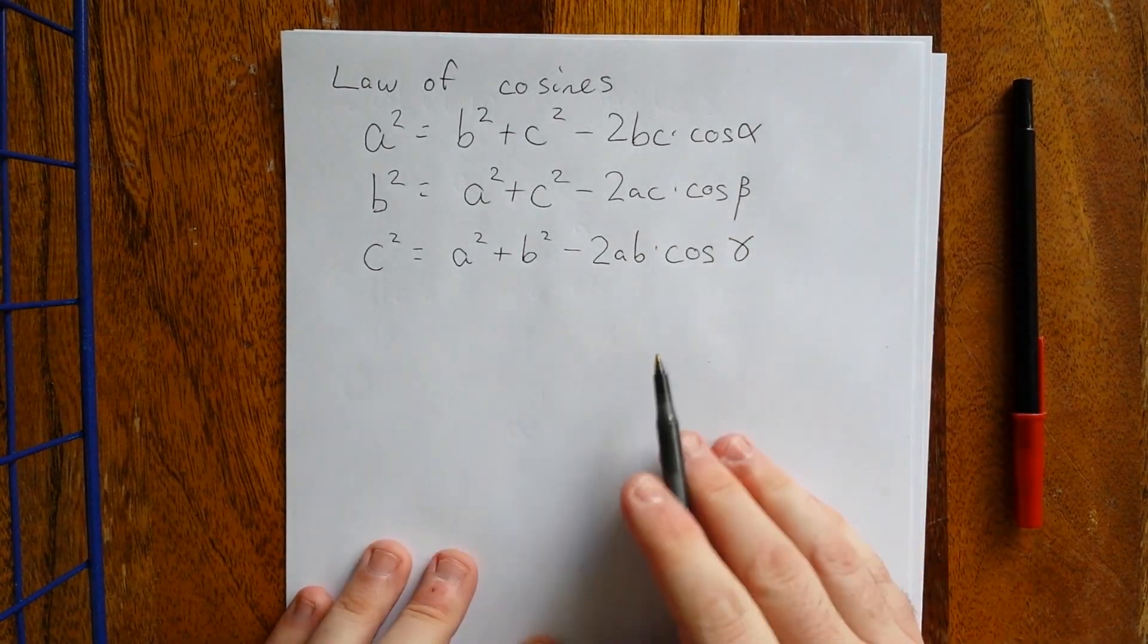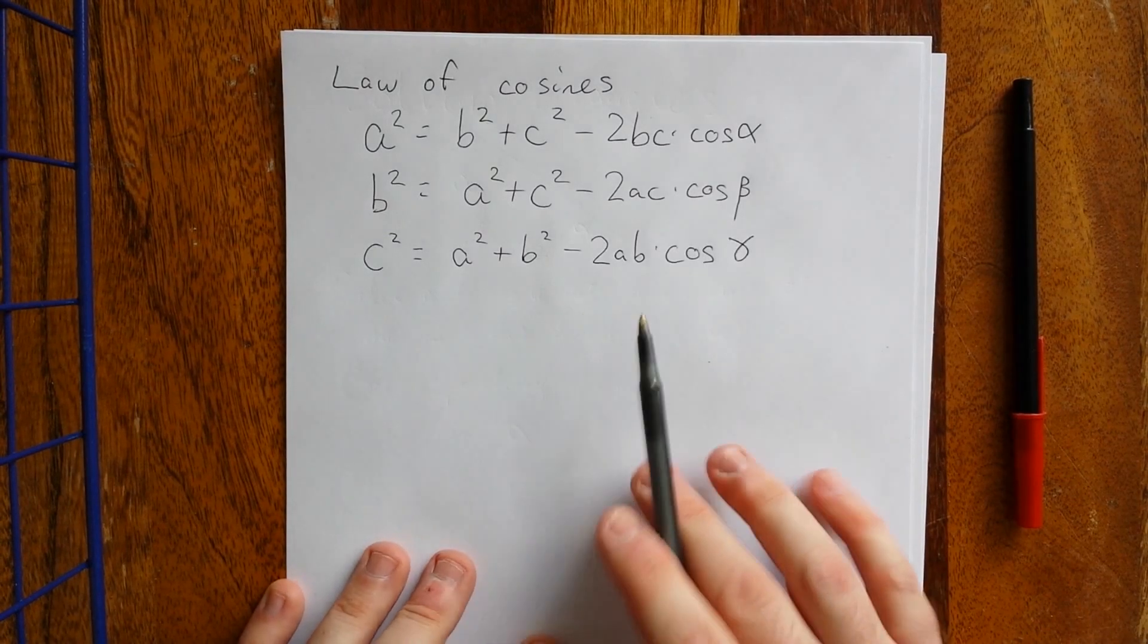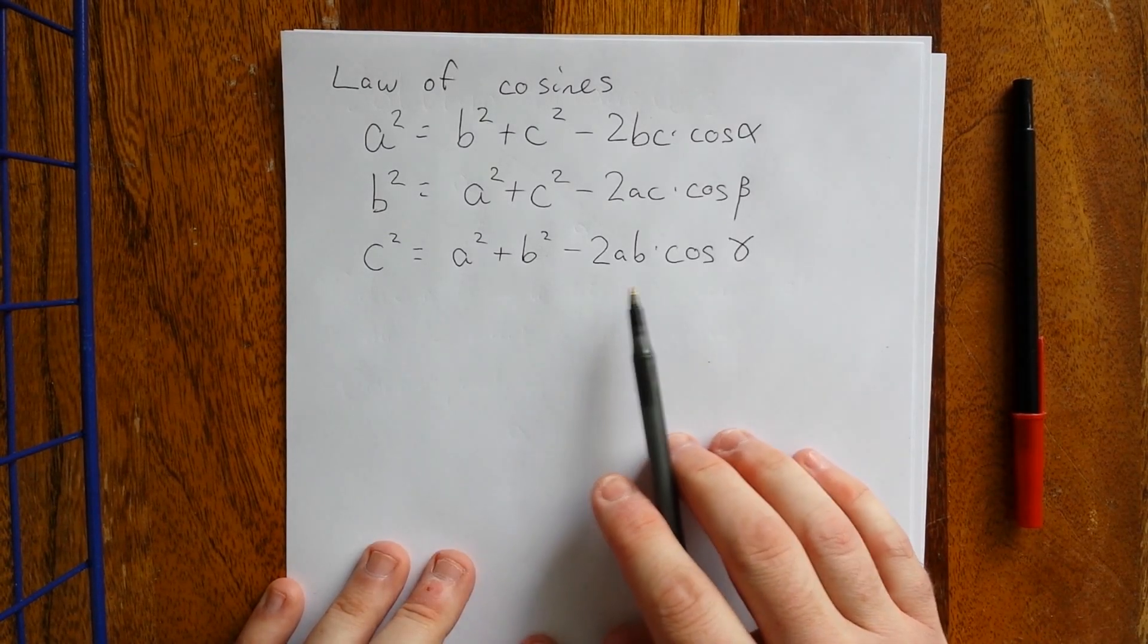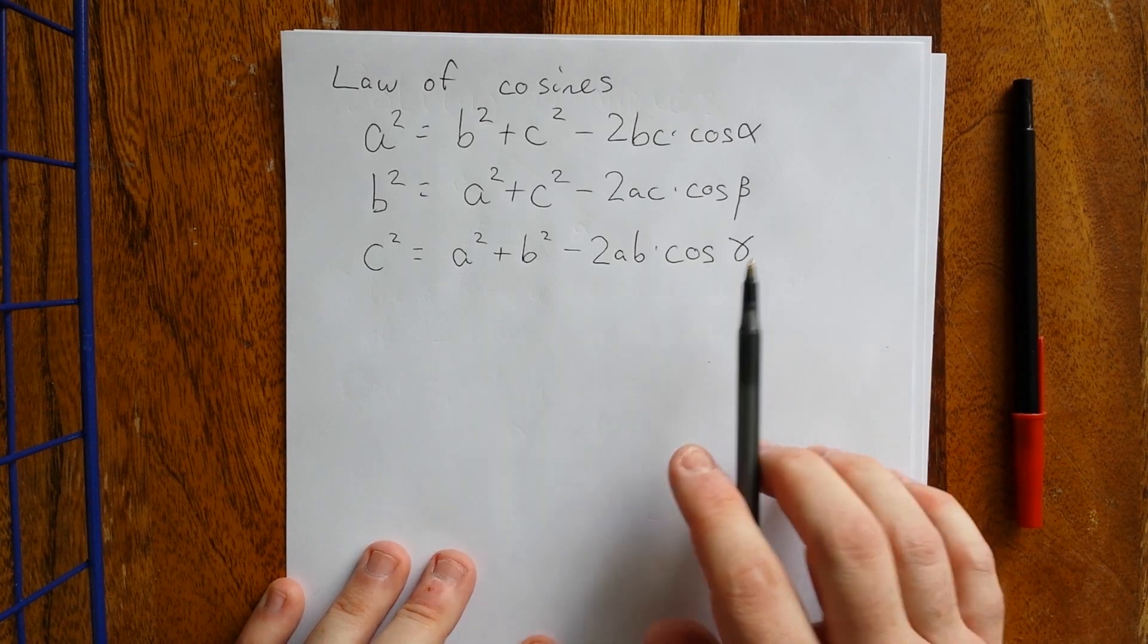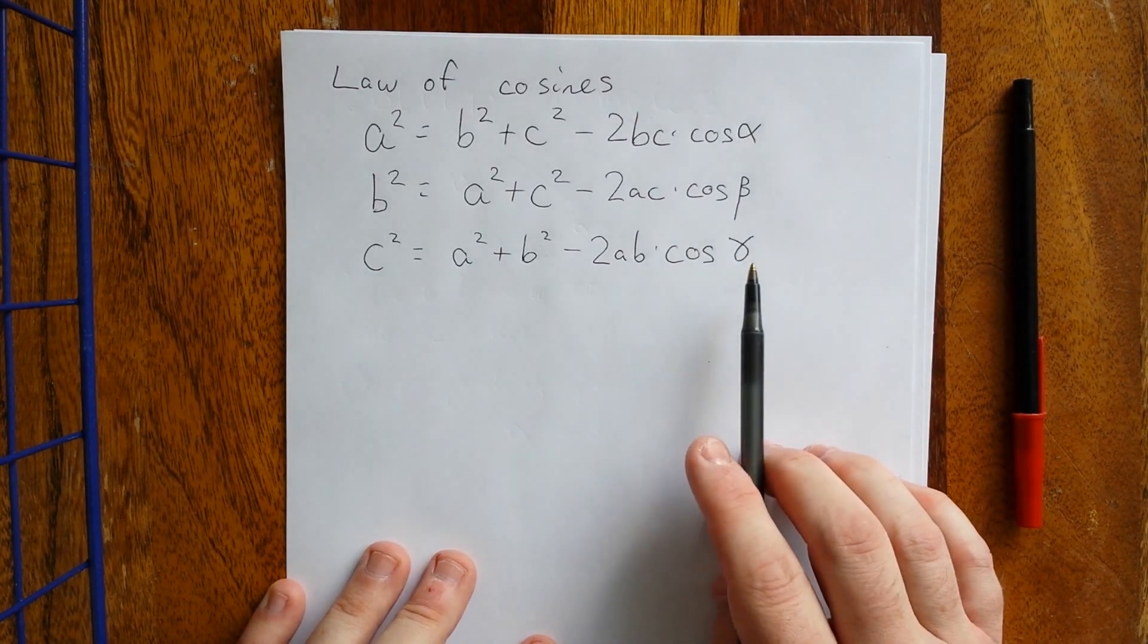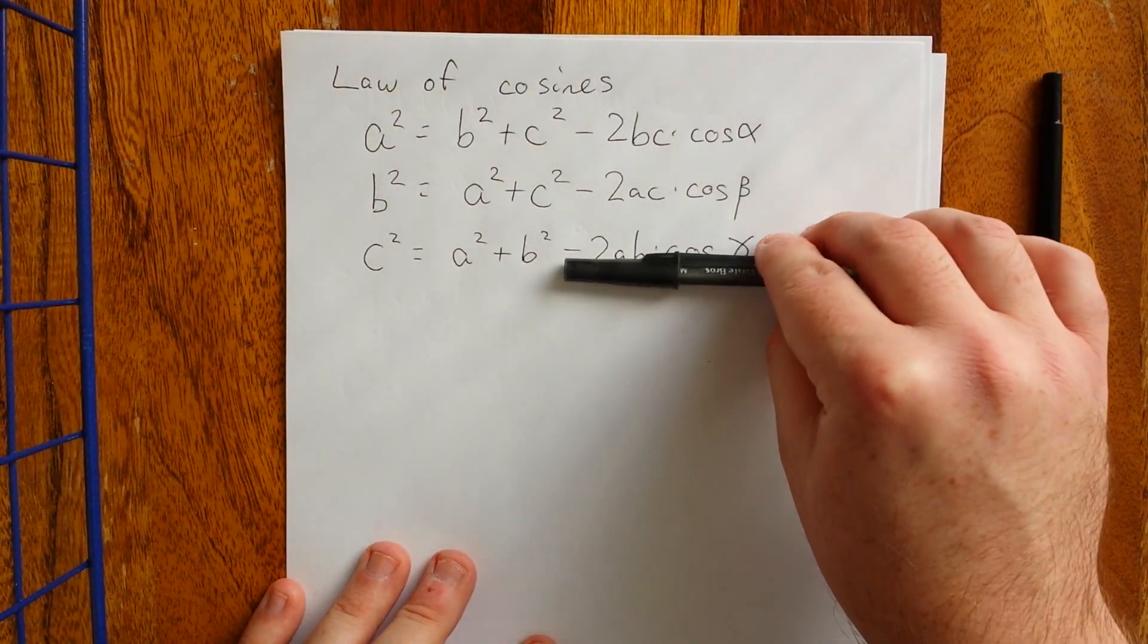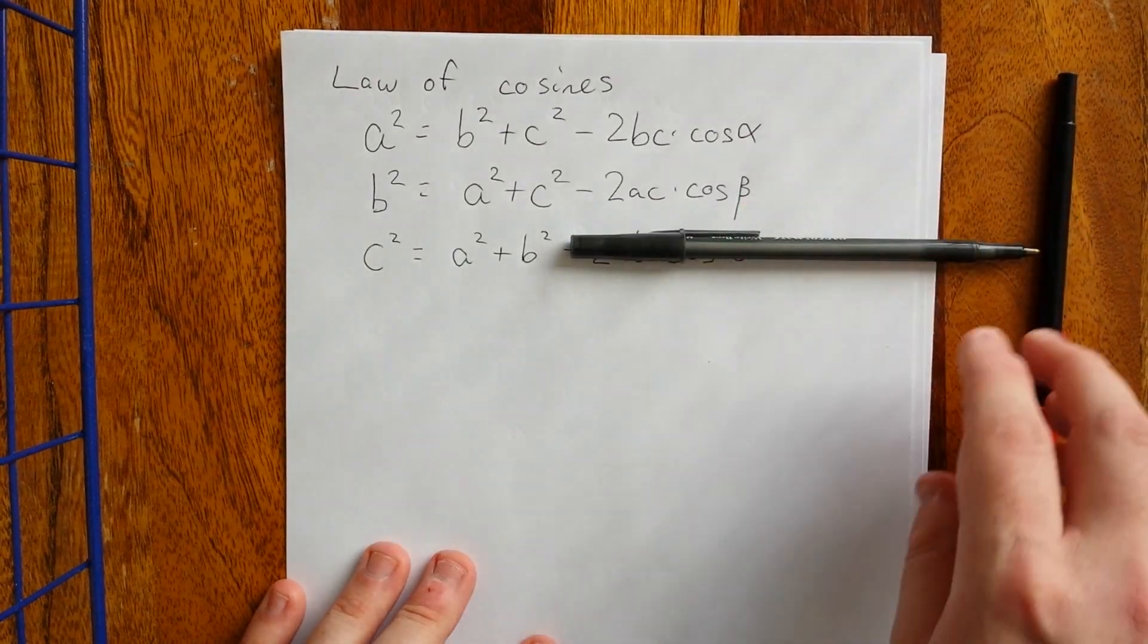For those of you who think that this might actually look a little bit familiar, you are absolutely right. When we have right triangles, one of our angles is equal to 90 degrees, and the one that's equal to 90 degrees usually gets labeled as gamma. If we're dealing with 90 degrees though, that means that the cosine is equal to zero.